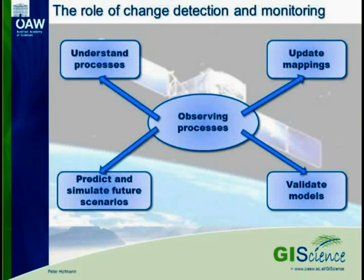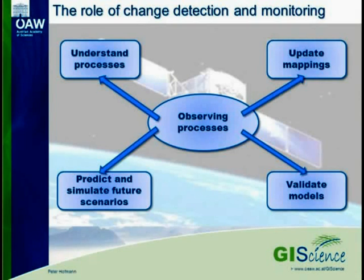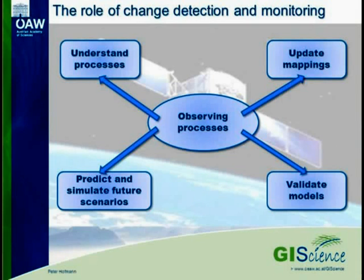What is the role of change detection and monitoring in remote sensing? Why are we doing this? Because we are all scientists — natural scientists — and we are interested in understanding processes. From this understanding, we also like to predict or simulate future scenarios to validate models. And of course, we are also doing map updating with change detection. These are different roles of change detection taking place here.